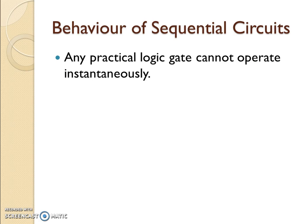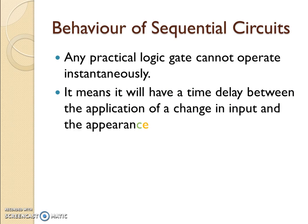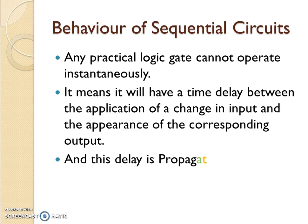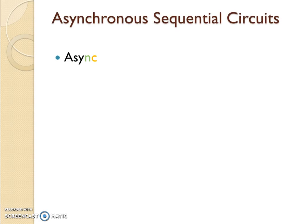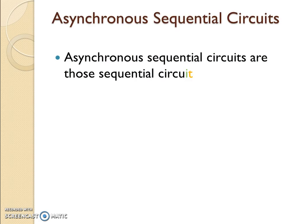Any practical logic gate cannot operate instantly. It means there is a time delay between the application of input and the corresponding output, called propagation delay. For asynchronous circuits, the propagation delay is variable. If you have different number of inputs or gates involved, more delay will be carried accordingly.